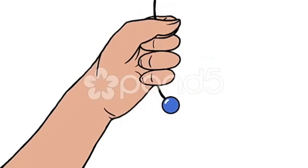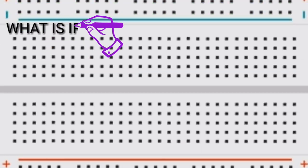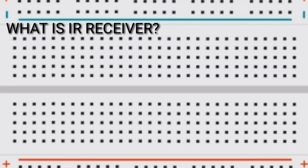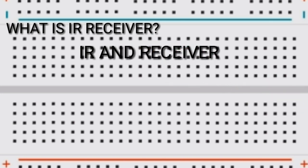What is IR receiver? The word IR receiver came from two words: IR and receiver. IR means infrared light.